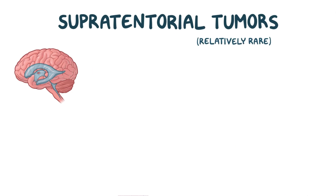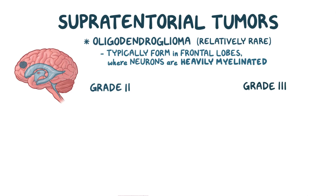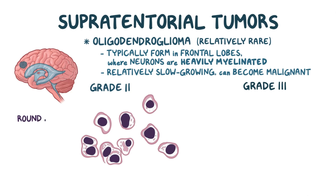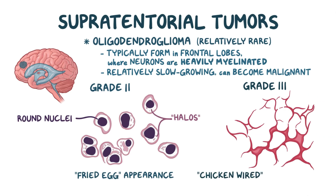A relatively rare supratentorial tumor is an oligodendroglioma. Because oligodendrocytes are found throughout the brain and spinal cord, oligodendrogliomas can form in any of these locations, but adult oligodendrogliomas typically form in the frontal lobes of the cerebral cortex because those neurons are the most heavily myelinated. These tumors are categorized as grade 2 or 3, with an overall tendency to be relatively slow-growing, though they still have the ability to become malignant. Histologically, prominent features can vary from small round nuclei surrounded by well-defined halos giving them a fried egg appearance in grade 2 tumors, to a chicken-wire pattern of nearby blood vessels with areas of calcification in grade 3 tumors.